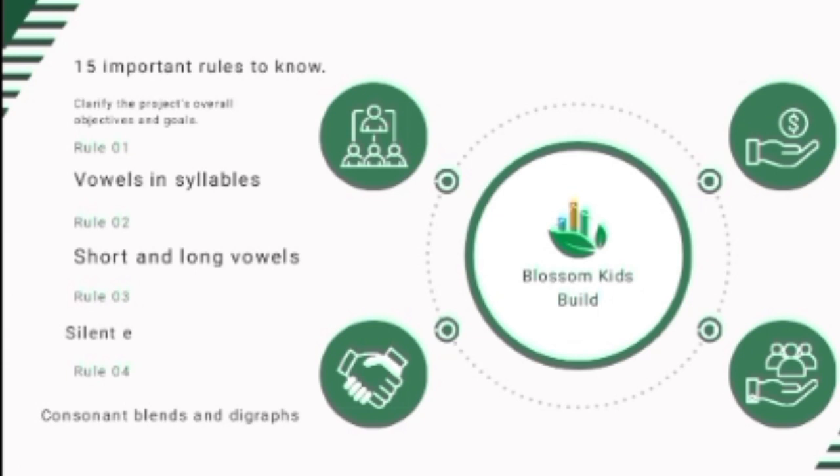When we talk about consonant blends, the two individual sounds can still be heard as they are blended together. For example, 'clam' — the CL blend — and 'scur.' These are consonant blends where a group of two or more consonants work together. Unlike digraphs, which make one entirely new sound, in consonant blends you can still hear each individual sound. Examples include CL, GR, 'grabs,' and 'clap.'